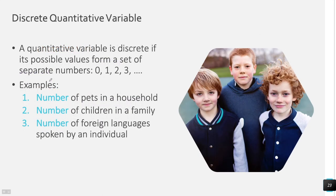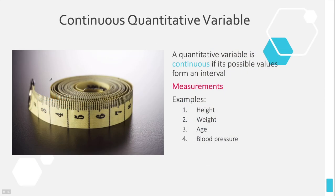For quantitative variables, discrete examples include the number of pets in a household, the number of children in a family, or the number of foreign languages spoken — anything that's a whole number value. It's not going to keep going out more and more precisely. The continuous variable, on the other hand, does keep going out forever, more and more precisely. Continuous variables are always measurements.